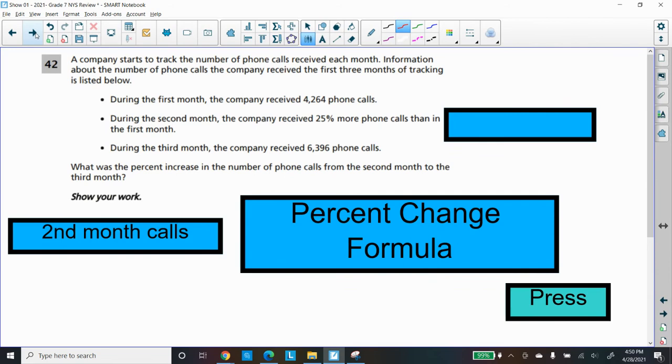This is question number 42. A company starts to track the number of phone calls received each month. Information about the number of phone calls the company received the first three months of tracking is listed below. During the first month, the company received 4,264 phone calls. During the second month, the company received 25% more phone calls than in the first month. So they got additional calls than the first month. I'm curious how many more?